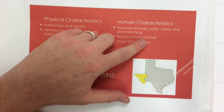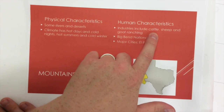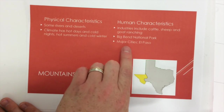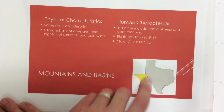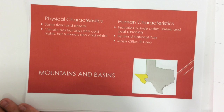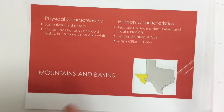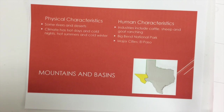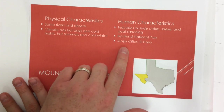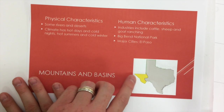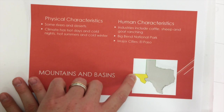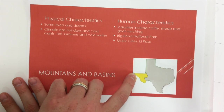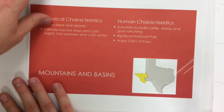The human characteristics: industries include a lot of ranching with cattle, sheep, and goat. Big Bend National Park is out here — it's a huge park in the mountains going towards Fort Stockton, Texas. The major city is El Paso, on the border between Texas, Mexico, and very close to New Mexico.